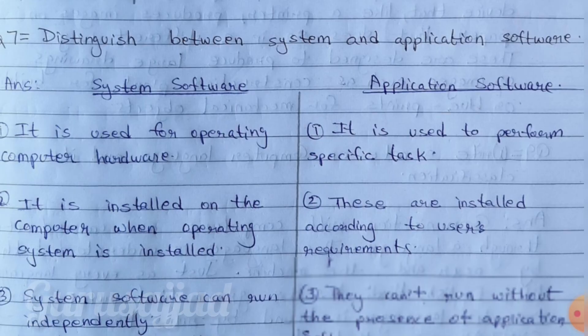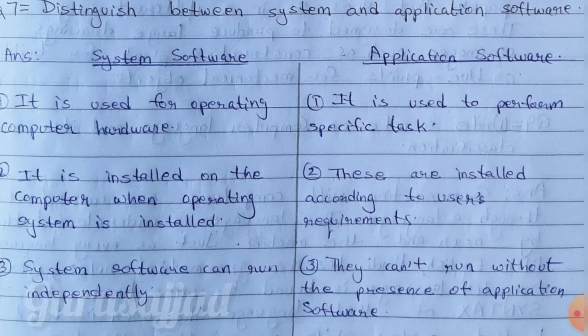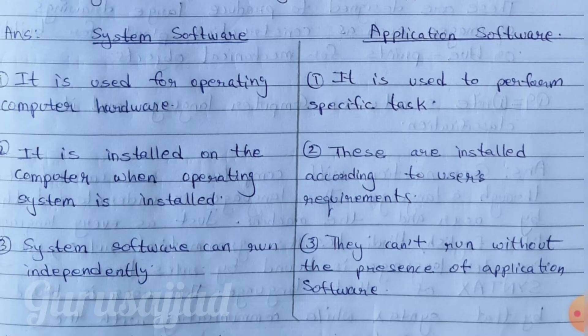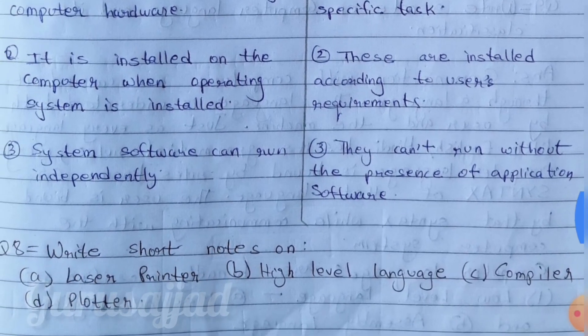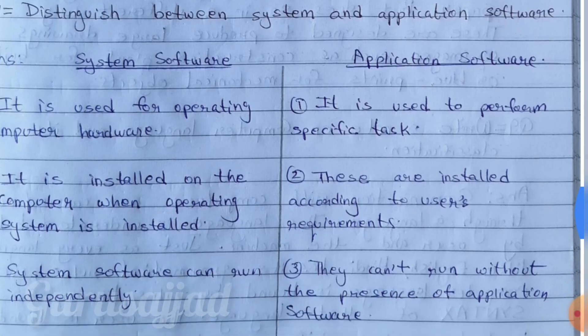Question number 7: Distinguish between system software and application software. This is very important — learn it by heart and try to present it in table/column format. System software is used for operating computer hardware; application software is used to perform a specific task. System software is installed when the operating system is installed; application software is installed according to user requirements. System software can run independently; application software cannot run without the presence of system software.